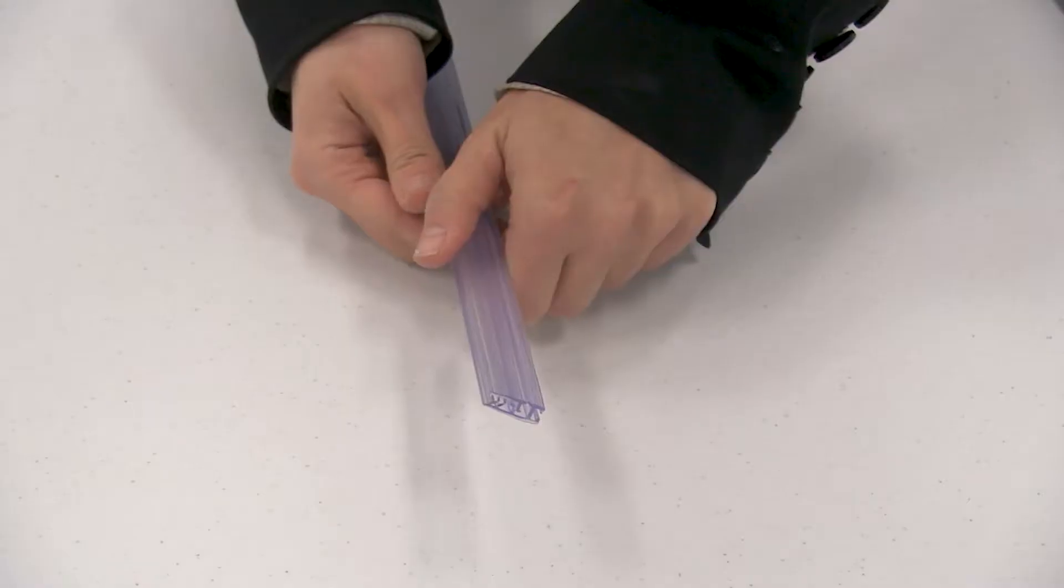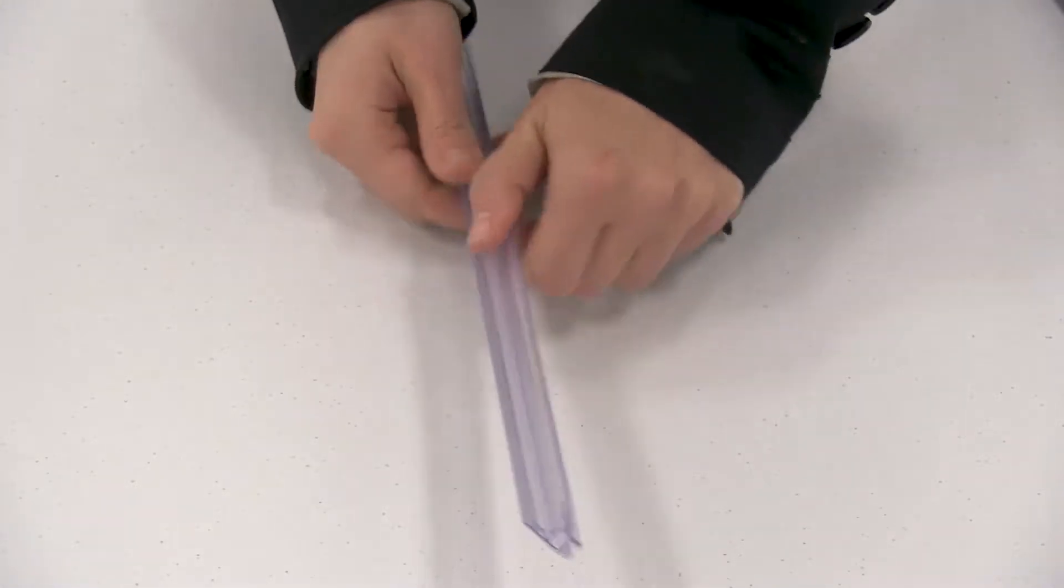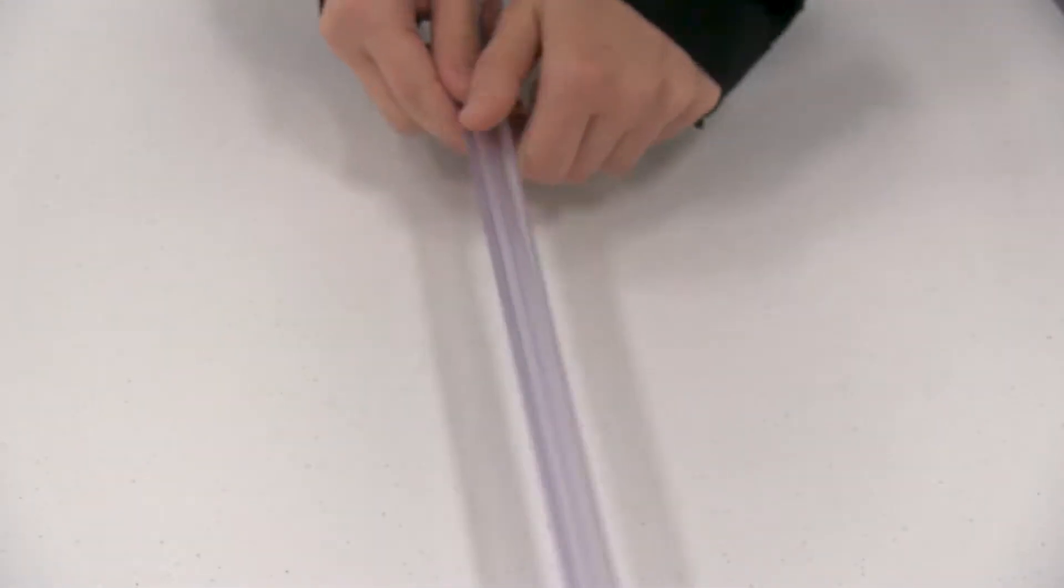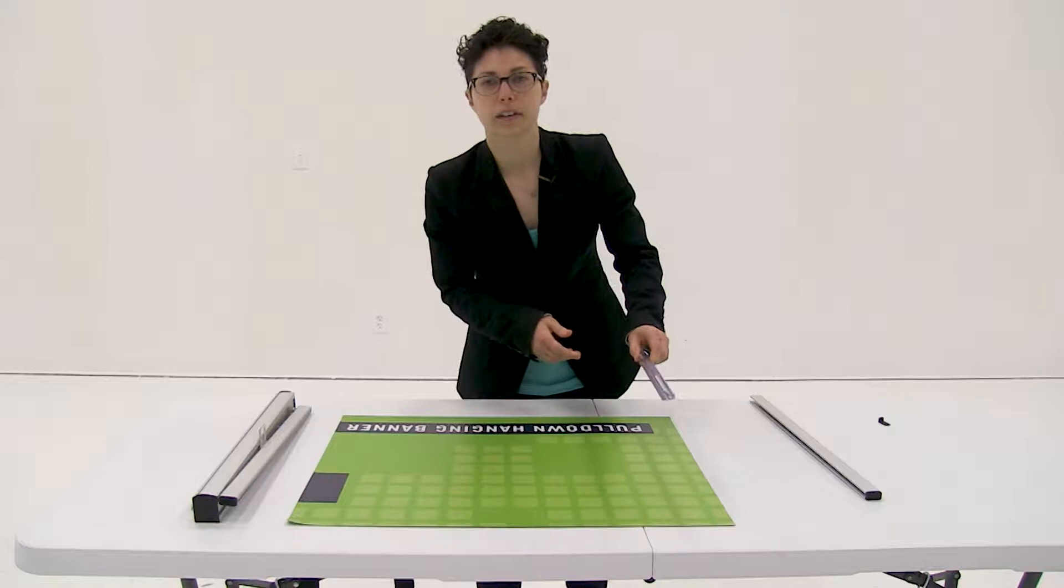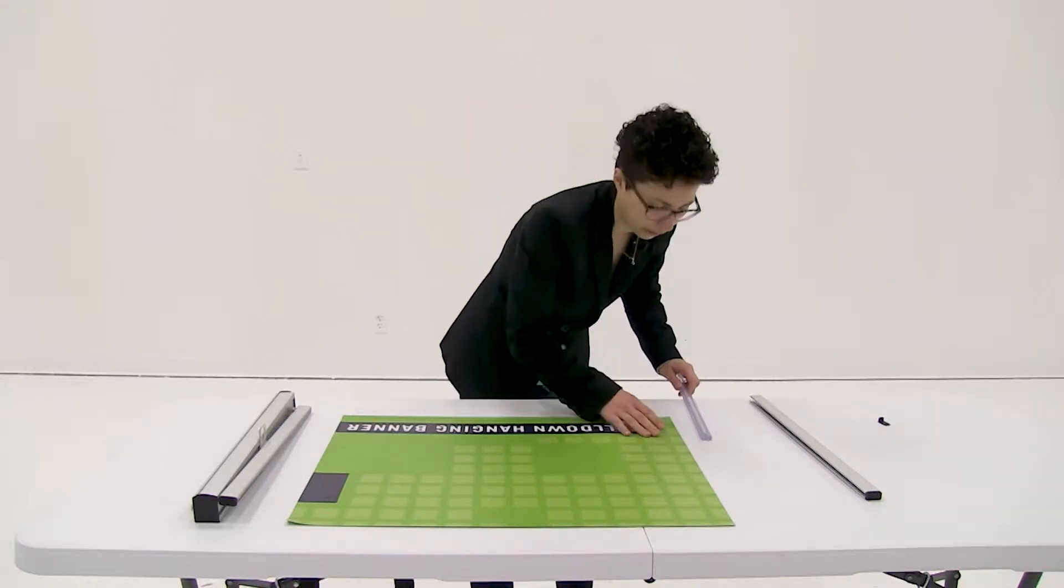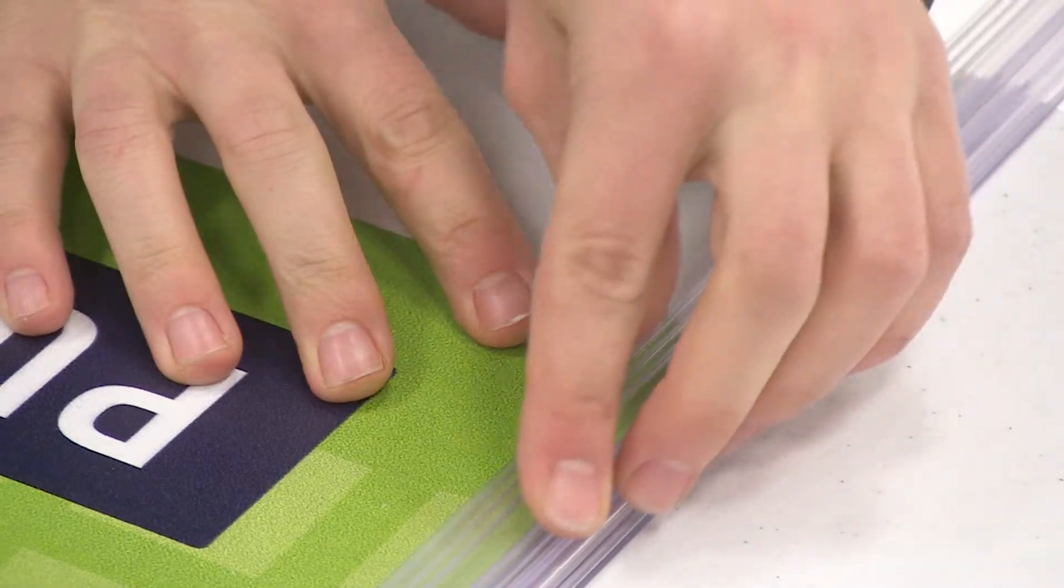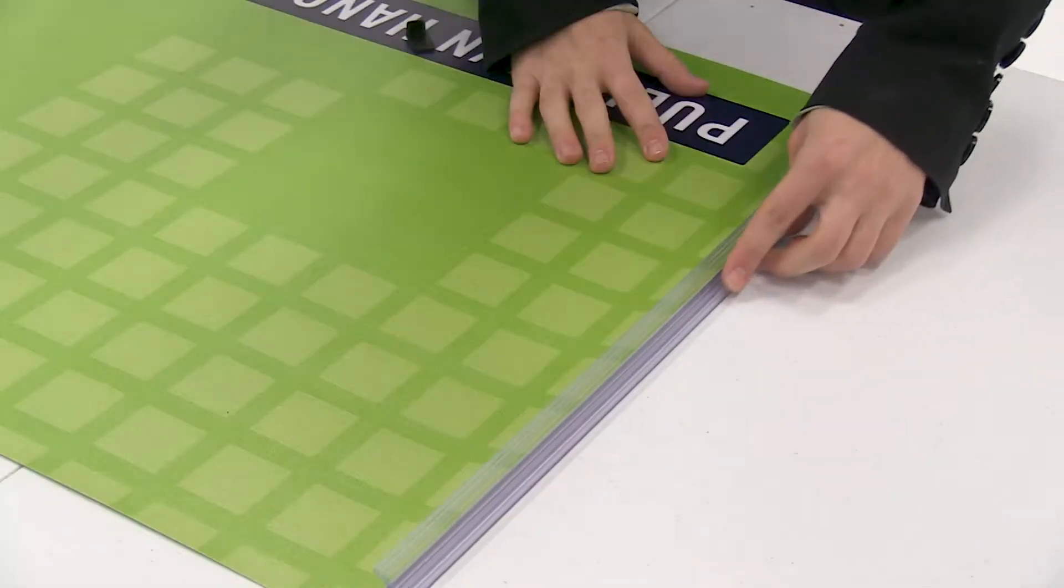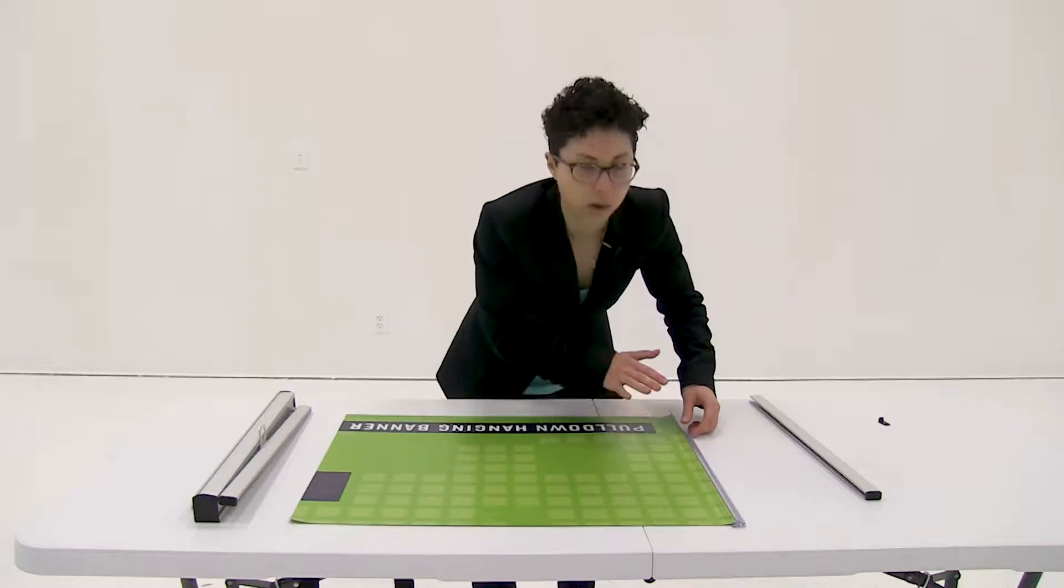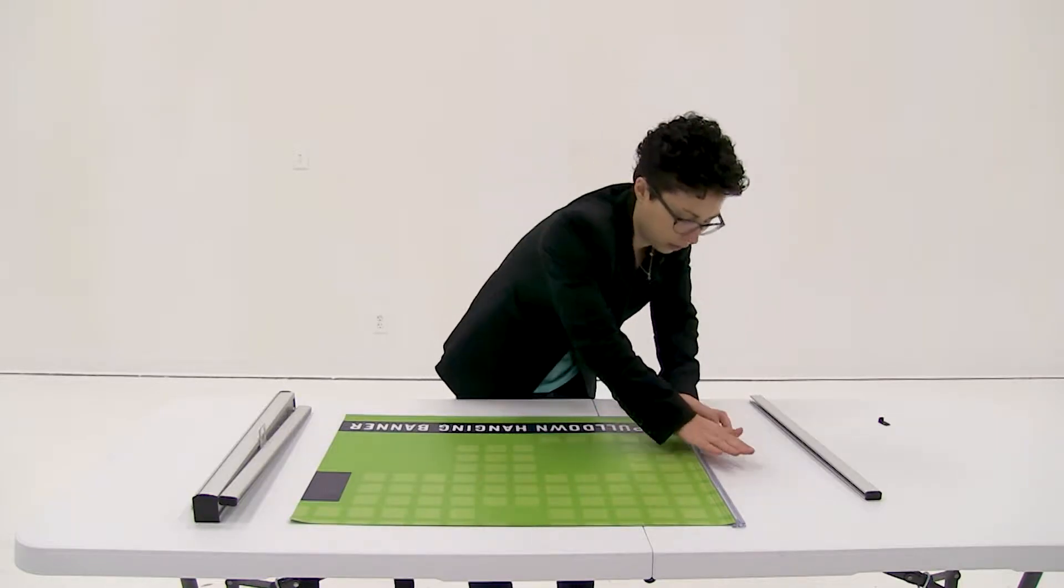Open the snap rail and then slide it onto your graphic. Once you have the snap rail slid on, clamp it shut.